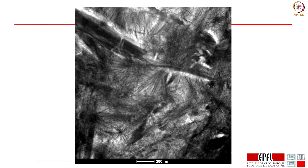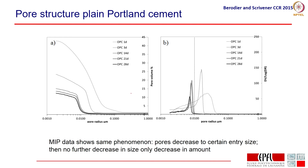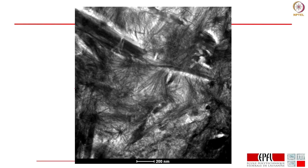We can see the same phenomenon by mercury intrusion porosimetry. We see that mercury intrudes and then right at a very fine pore size we get a very strong intrusion, and that the size of this first pore entry after a certain time does not get any smaller. So we are really seeing the same phenomenon — after a quite short time the only way of getting into the sample is through these fine interhydrate pores.